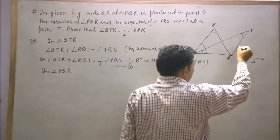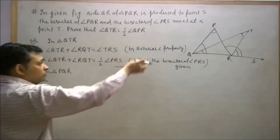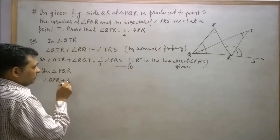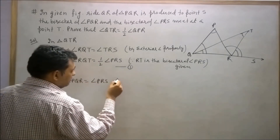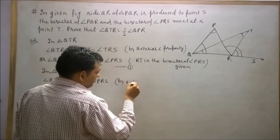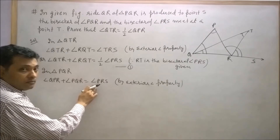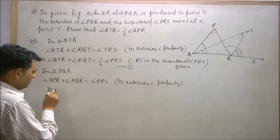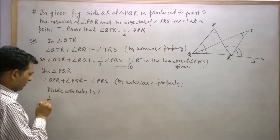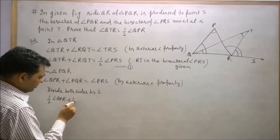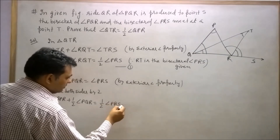Now consider triangle PQR. In triangle PQR, this angle plus this angle will equal this angle by the exterior angle property. Angle QPR plus angle PQR is equal to angle PRS by exterior angle property. Then divide both sides by two.